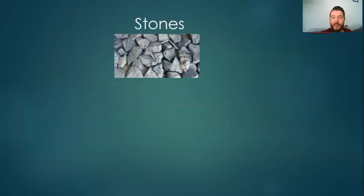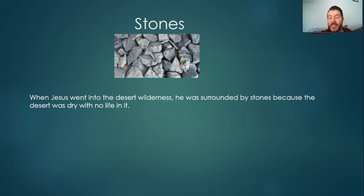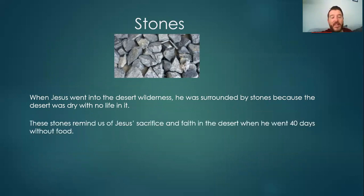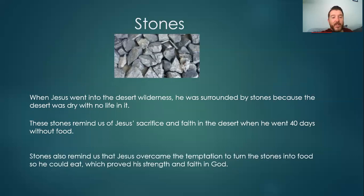Stones are also a symbol of Lent. When Jesus went into the desert wilderness, he was surrounded by stones because the desert was dry with no life in it — what is now Israel, around Jerusalem, the wilderness was very, very dry with lots of stones. These stones remind us of Jesus's sacrifice and his faith in the desert. When he went 40 days without food, he didn't give in — he carried on. He showed how strong he was. Stones also remind us that Jesus overcame the temptation to turn the stones into food so he could eat, which proved his strength and faith to God. The devil said to him: if you're the son of God, why don't you turn all these stones into bread so you can eat? And Jesus knew he could, but he said no — I'm not doing it.